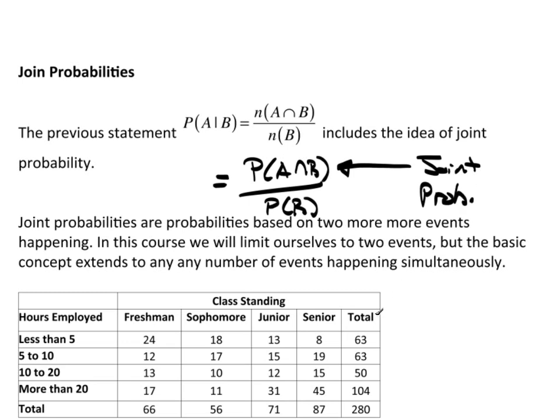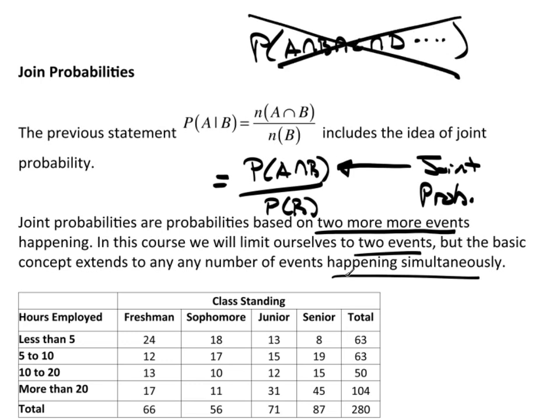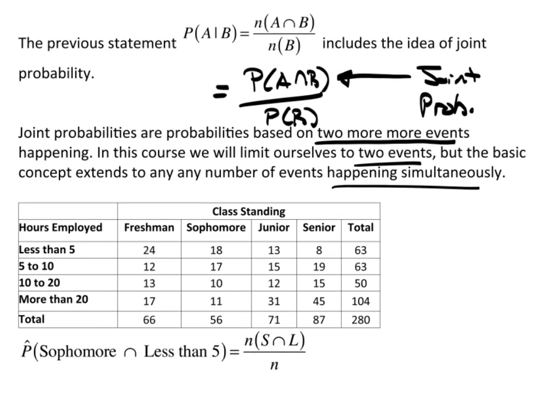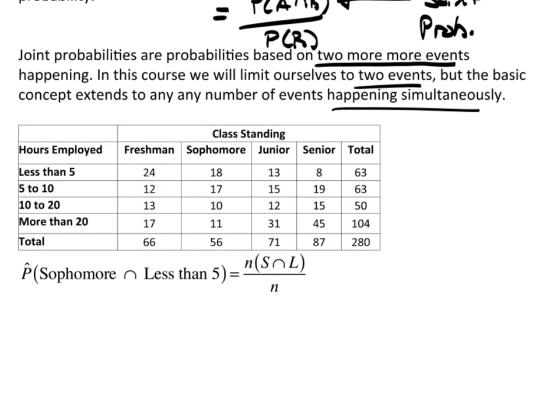The joint probability, our probability is based on two or more events happening at the same time. In this course, we're going to limit ourselves to only two events. But this basic idea, this concept extends way beyond that. We can actually do three events, four events, any number of events happening simultaneously. So we look at the probability of A and B and C and D, and so on. But we won't do that in this course. We will limit ourselves to only two events. And in a more advanced stat class, you would be working with this idea.